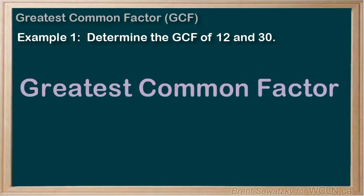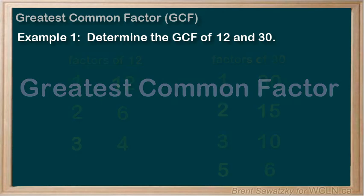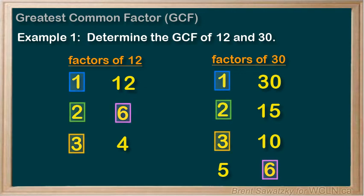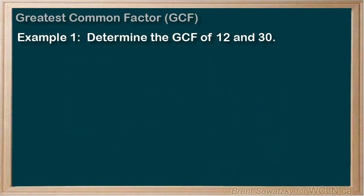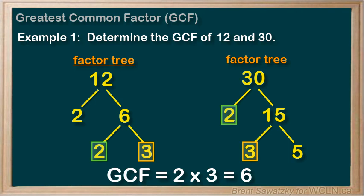In this tutorial, we looked at the greatest common factor of two numbers. The GCF is a factor that is common to both numbers and is the greatest or largest one. We looked at two ways to determine it. The first: simply list all the factors, identify the common ones, and then see which is the greatest. For the second method, more compatible with large numbers, we made factor trees and identified the common prime numbers. If there are multiple common prime numbers, we multiply them, and the result is the greatest common factor.